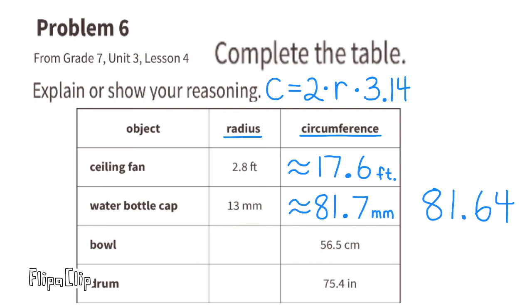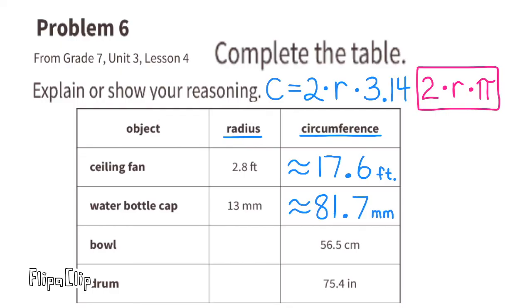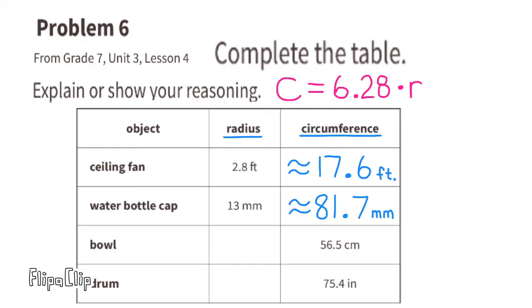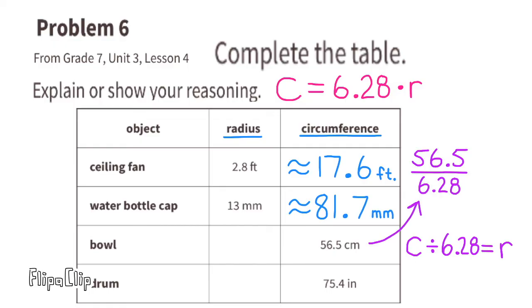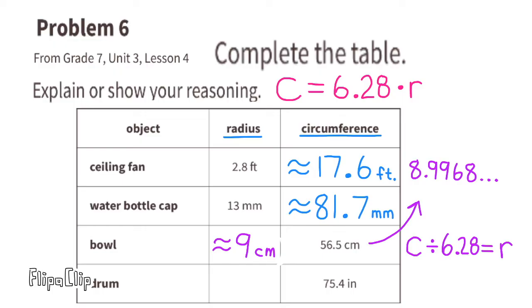For the bowl, the circumference is given as 56.5 cm and we need to find the radius. Rearranging C = 2 × π × r gives r = C ÷ 6.28. So 56.5 ÷ 6.28 gives a radius of approximately 9 centimeters.